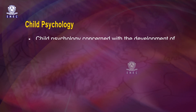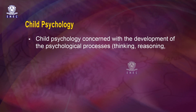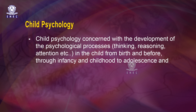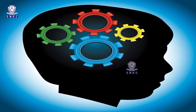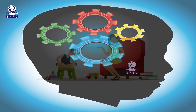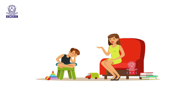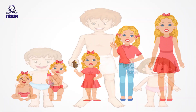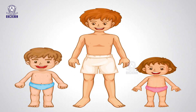According to H. J. Isink, child psychology is concerned with the development of psychological processes — that is, thinking, reasoning, attention, etc. — in the child from birth and before, through infancy and childhood, to adolescence and maturity. More specifically, child development or child psychology deals with understanding of growth and developmental patterns and the development of various characteristics in children.